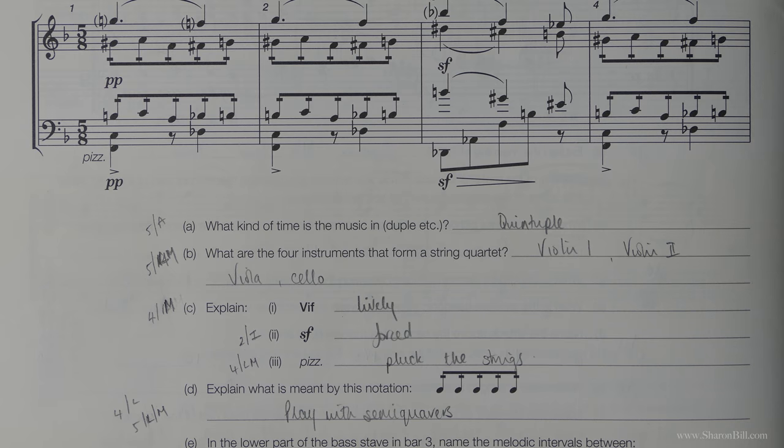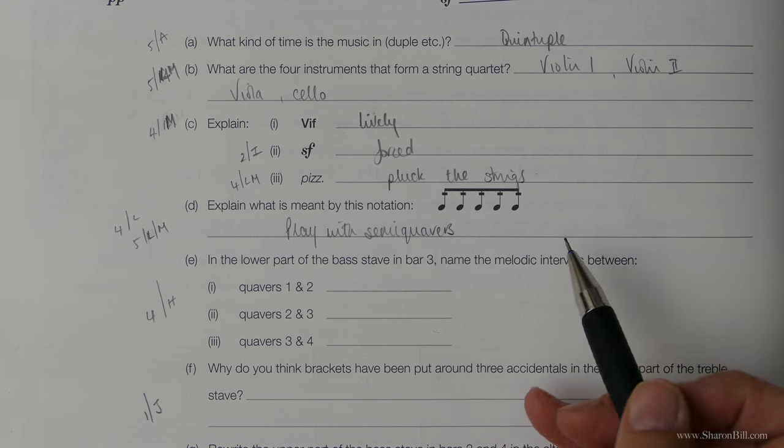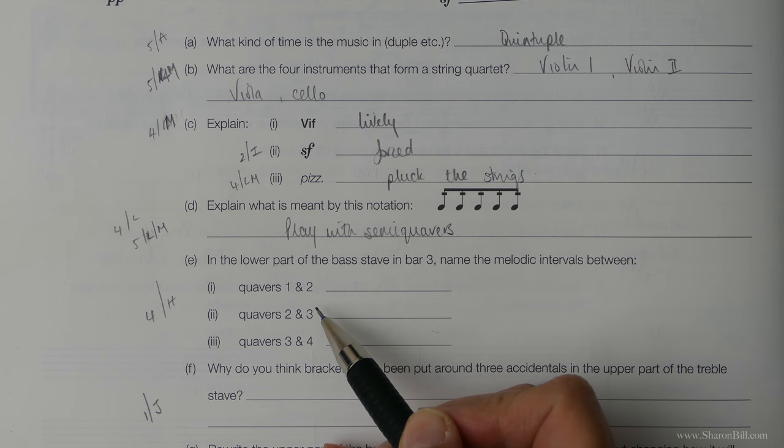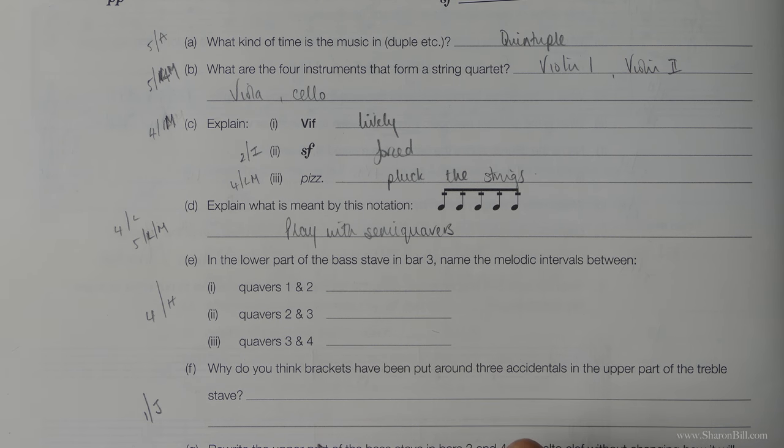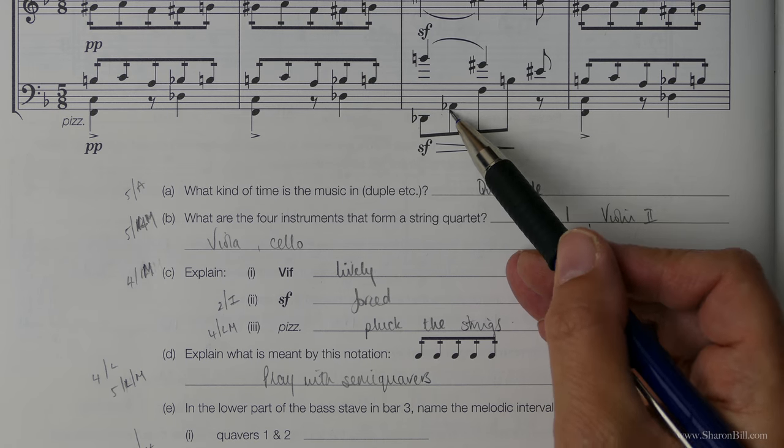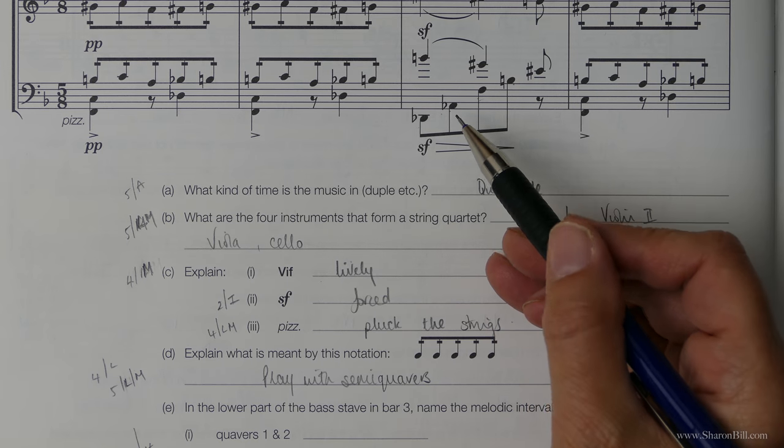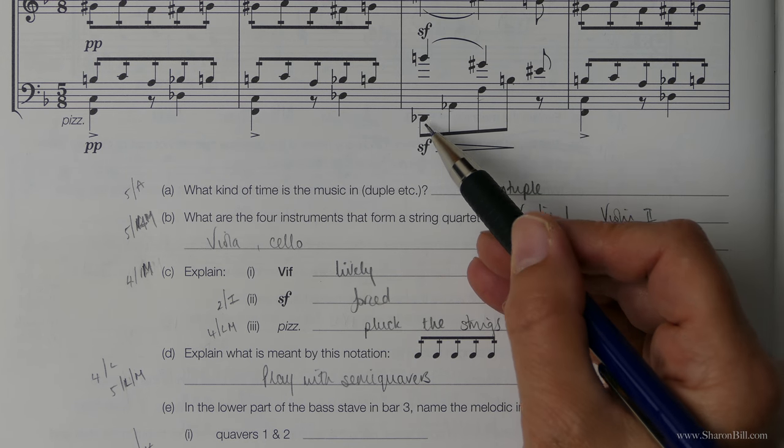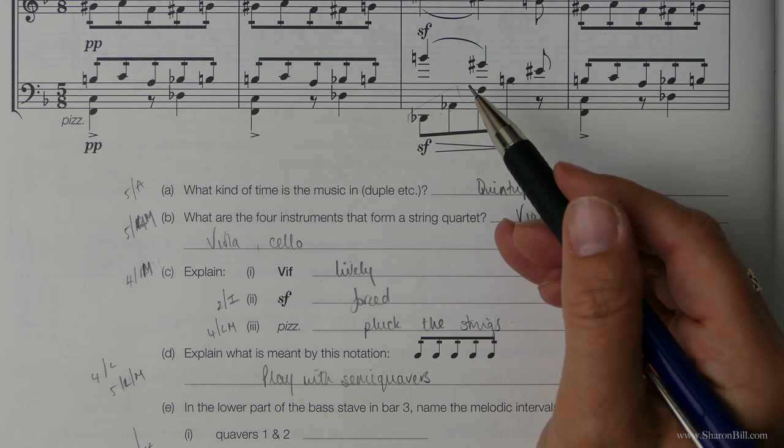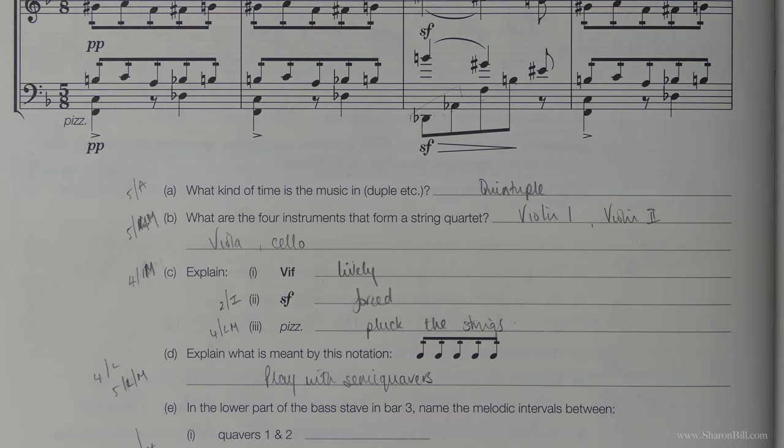Now we've got something a little bit more tangible. We're asked to name the melodic intervals. So melodic intervals means intervals that come one after another. And quavers in bar three, quavers one and two, two to three and three and four. So the first set is this one here where we've got a D flat to an A flat. We've got one, three, five, a fifth of some sort. And that would be a perfect fifth.